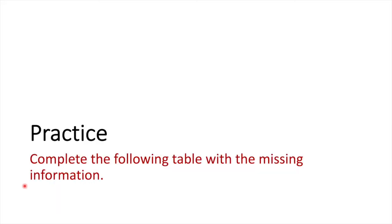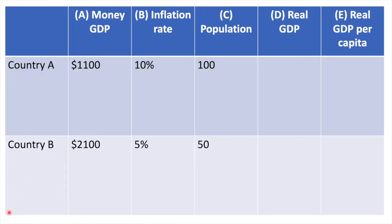It's time to practice. Complete the following table with the missing information. Using the information provided in columns A through C, calculate real GDP and real GDP per capita for Country A and Country B. Pause the video here. Country A's real GDP is $1,000 — if their money GDP is $1,100 and they experienced 10% inflation that year, we know some number X times 1.1 equals $1,100, so dividing gives $1,000. Similarly for Country B, X times 1.05 equals $2,100, so real GDP is $2,000. To calculate real GDP per capita, divide real GDP by the population of each country to get the respective figures.